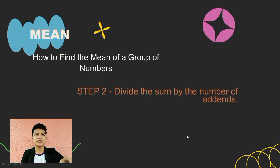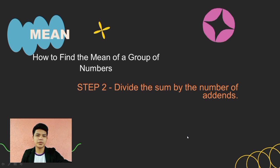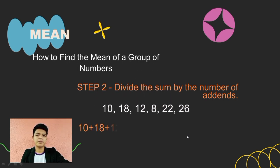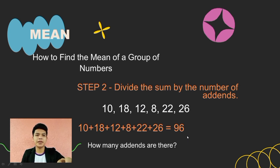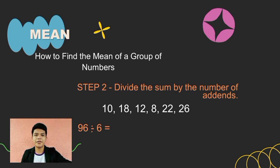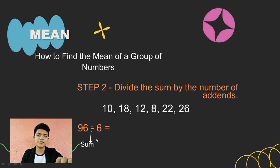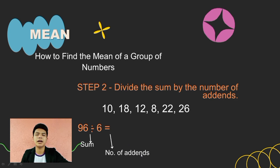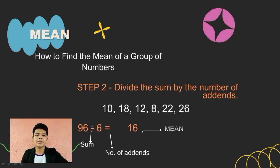The next step is to divide the sum by the number of addends. In our example, we count the addends: 1, 2, 3, 4, 5, 6 — there are 6 addends. Now that we have the sum 96 and we know there are 6 addends, let's divide: 96 divided by 6. So 96 is our sum, and 6 is the number of addends. 96 divided by 6 gives us 16. So 16 is our mean.